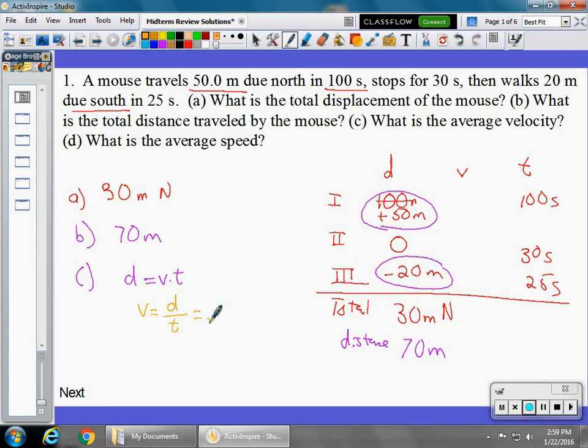So displacement, we said, was 30 meters due north. We need our total time. In the time category, we had 100 seconds, 30 seconds, and 25 seconds. That's 155 seconds.